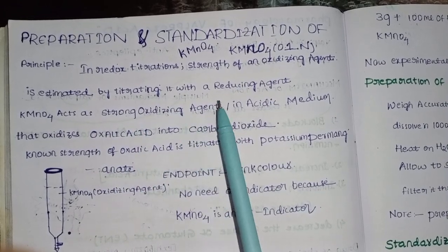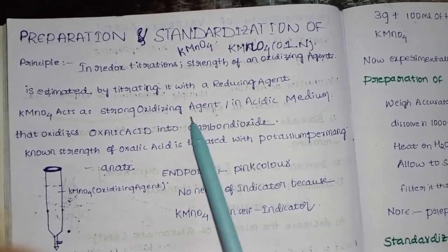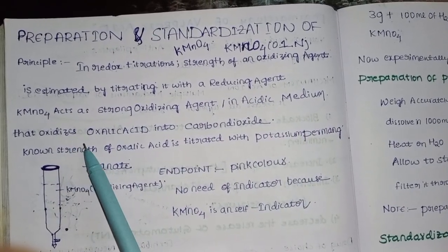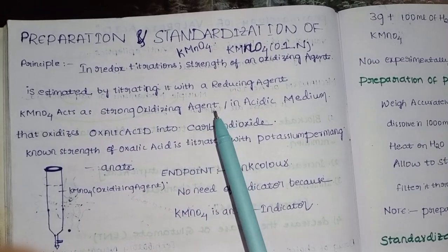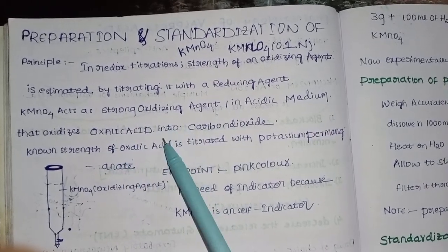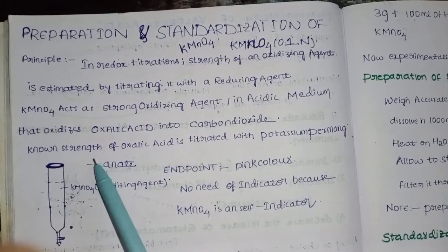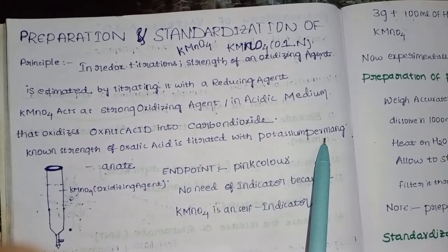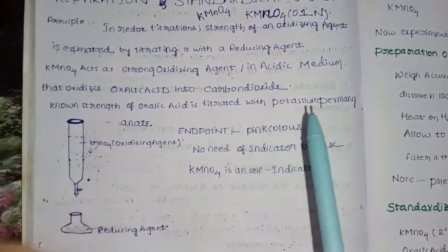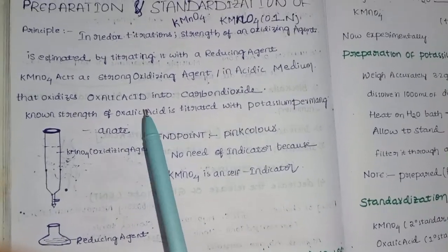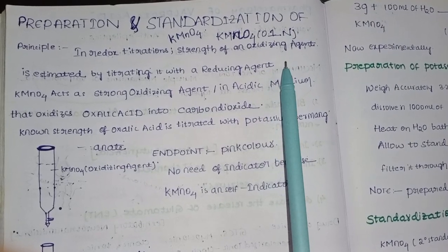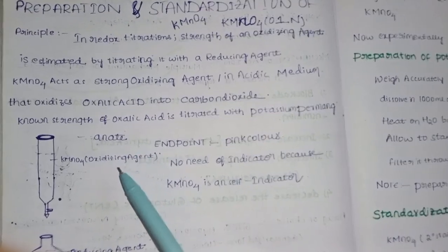KMnO4 is a strong oxidizing agent in acidic medium. This titration is done in acidic medium, and it oxidizes oxalic acid into carbon dioxide. KMnO4 and oxalic acid react to form carbon dioxide. The known strength of oxalic acid is treated with potassium permanganate to prepare the standard for KMnO4 at 0.1 normal.